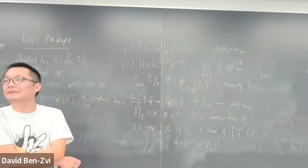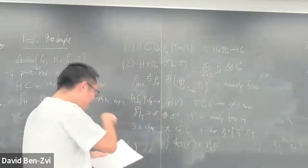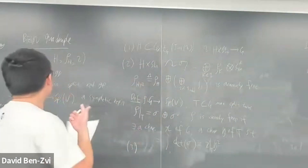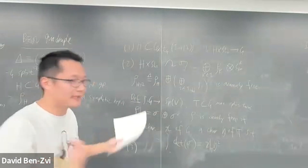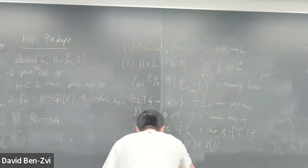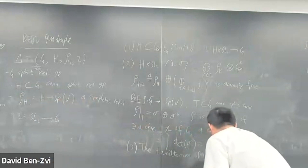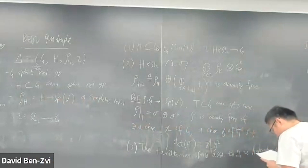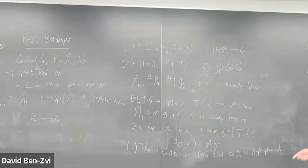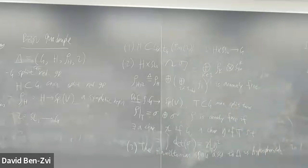The third condition, which we don't need much in this talk, is that associated to this data we can associate a Hamiltonian space, and it needs to be hyperspherical. This is basically wanting H and all those things to be large enough. Now with these conditions, we need to define the period.